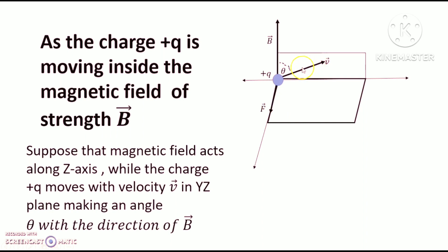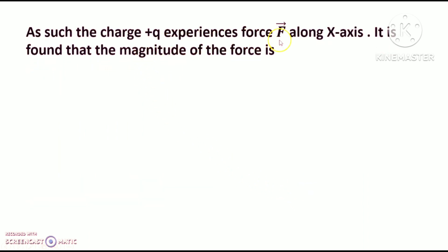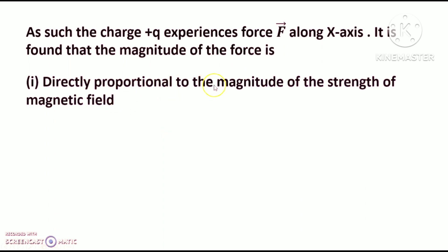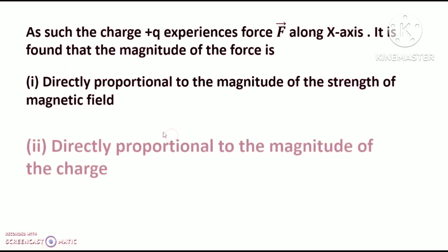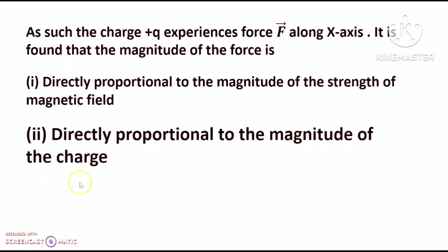Velocity v is along the y-z axis, and the x-axis is along the direction of force. The component v sine theta is the projection part perpendicular to B. The charge plus q experiences a force along the x-axis. It is found that the magnitude of the force is directly proportional to the magnitude of the strength of the magnetic field, and directly proportional to the magnitude of the charge.